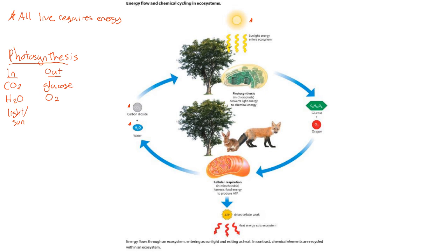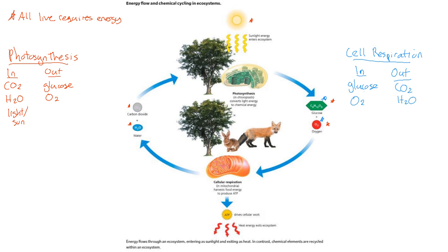Now let's put cell respiration, which we're talking about right now. In cell respiration, what goes in? Glucose and oxygen. And what's going to come out of cell respiration? We're going to produce carbon dioxide, water, and energy — ATP — which is energy that your cells will use for their cellular work. We also make a lot of heat. So these are both forms of energy.